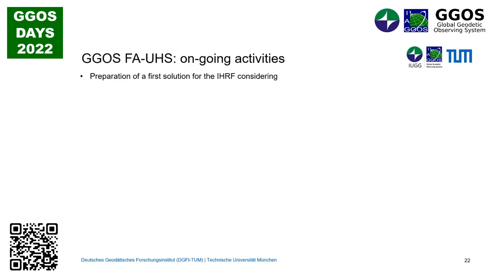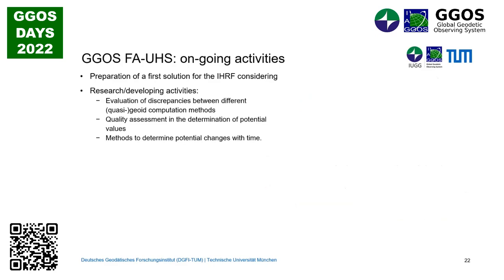What are we doing now? We are working on some research on hot topics, because there are still open questions to be solved. We have not totally identified the discrepancies between the different solutions, so we are still working on this problem. We need to improve the quality assessment in the determination of the potential values, because today we can define a mean average accuracy for the geoid model but point-wise this is not possible. We are also trying to identify which methods we can apply to determine the variation of the potential with time.